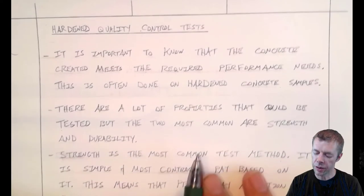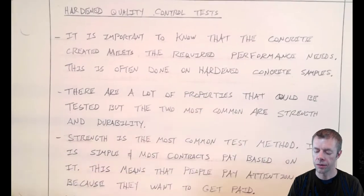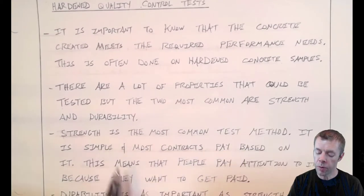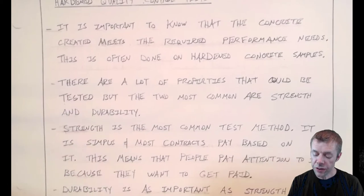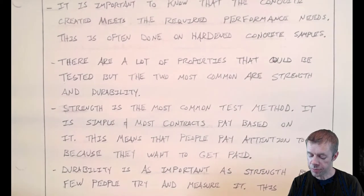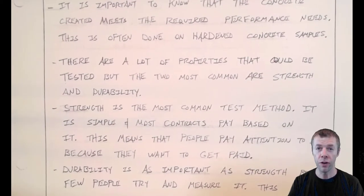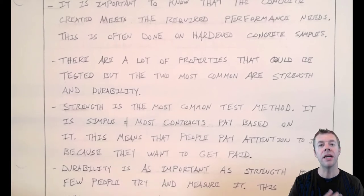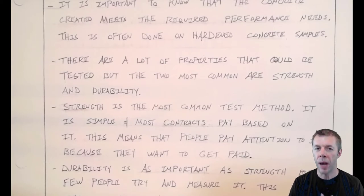There's a ton of different properties that we could be testing, but the two most common ones are strength and durability. Strength is by far the most common test method ever used to evaluate concrete. It's simple and most contracts pay based on it.